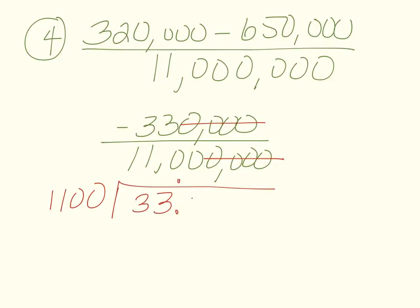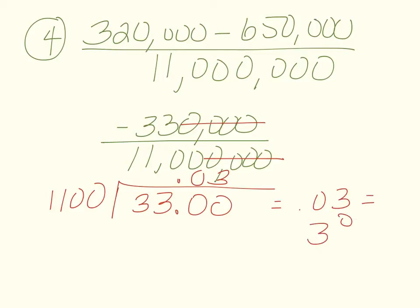Bring up the decimal; add a zero — still doesn't go in. Add another zero; 1,100 goes into 3,300 evenly three times. Our answer is 0.03, which is equal to 3%.